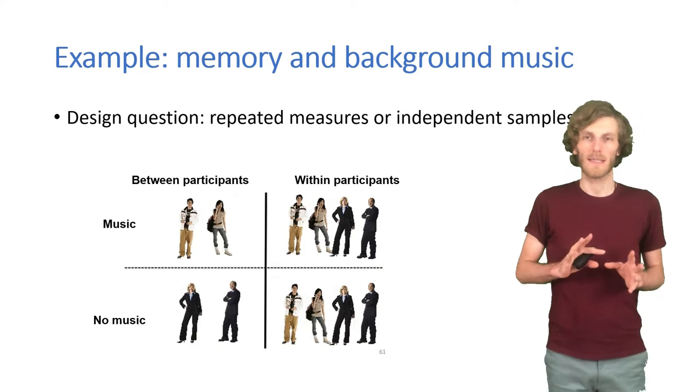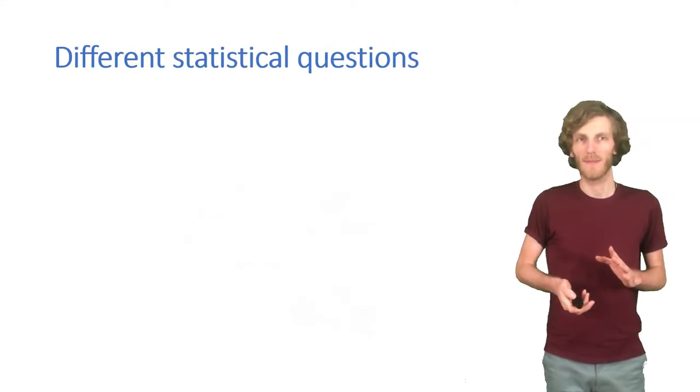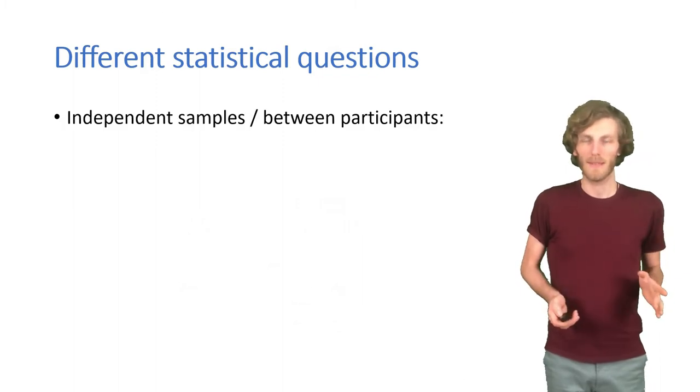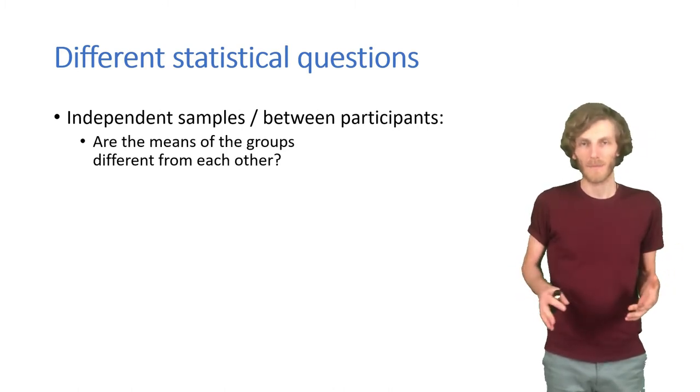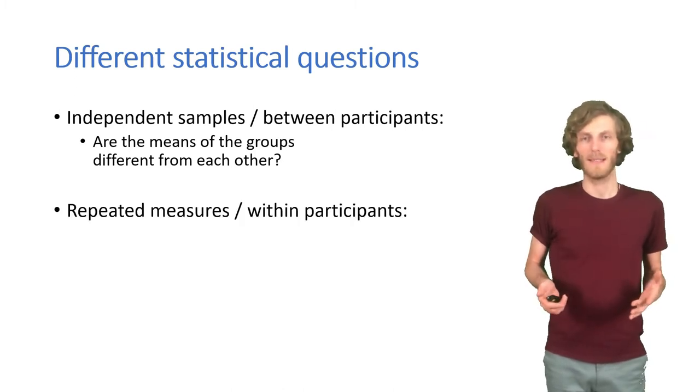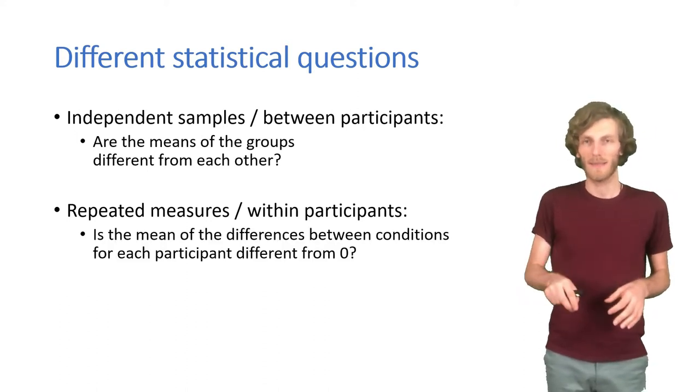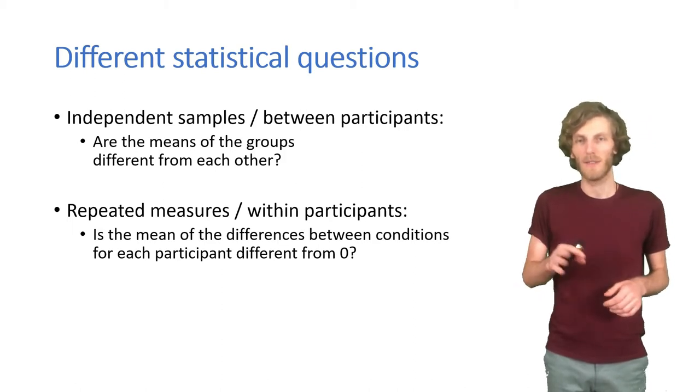Those two situations lead to slightly different statistical questions. So if we have independent samples, then the question just is are the results in the two samples different from each other. When we have repeated measures, it's actually a little bit more complicated. The question then is whether the mean of the differences for each individual participant, whether those means differ from zero.